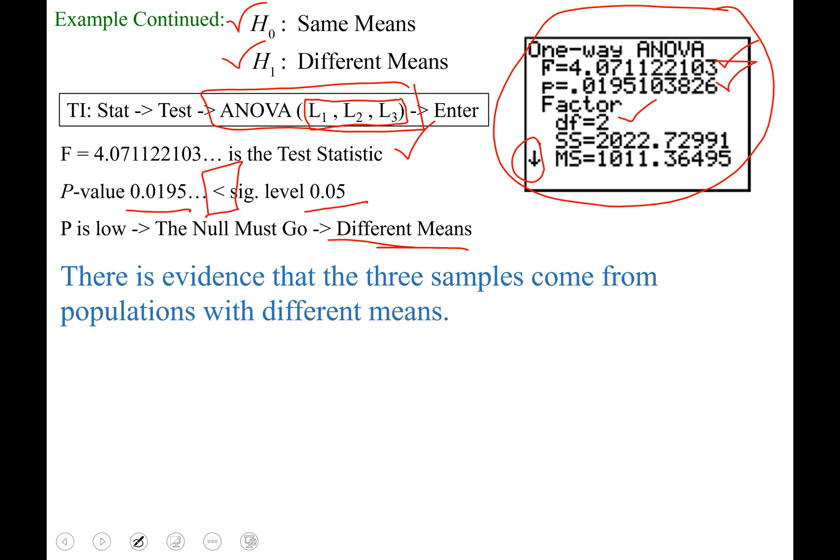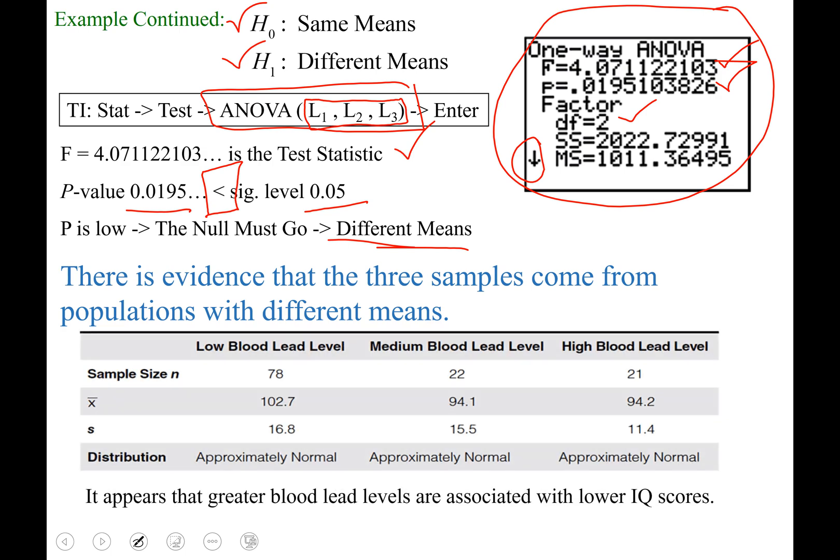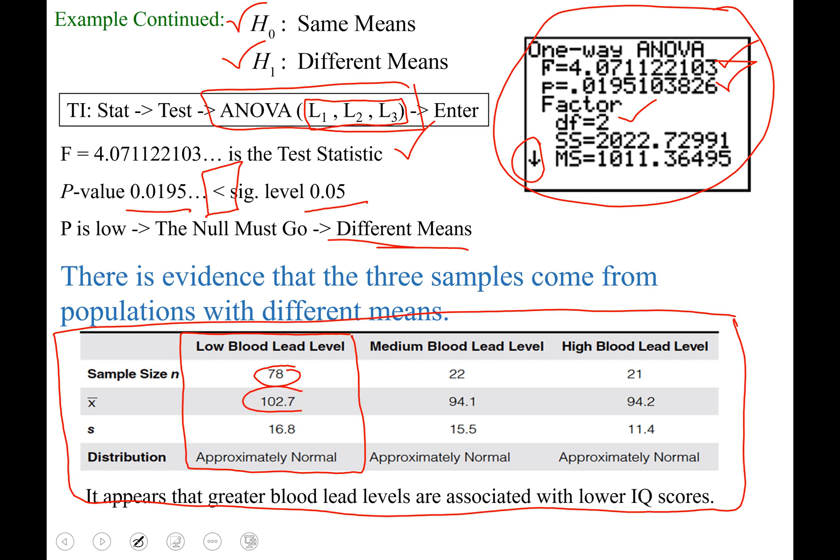And a conclusion would be, there is evidence that the three samples come from populations with different means. This next snapshot right here, it was given to us, but you may be asked to calculate these values on your own, so I want you to know how to do those. This first set right here comes all from that first population, the low blood lead levels. The 78 is because we had lowercase n equals 78 data values. The x-bar of 102.7, you can find that right now by running one variable stats on your graphing calculator or StatCrunch. I'll walk you through it.